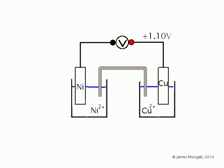What we've predicted here is this: that if we were to measure this nickel-copper cell and put the nickel on the left-hand side, the copper on the right-hand side, then we would record a voltage of plus 1.10 volts.